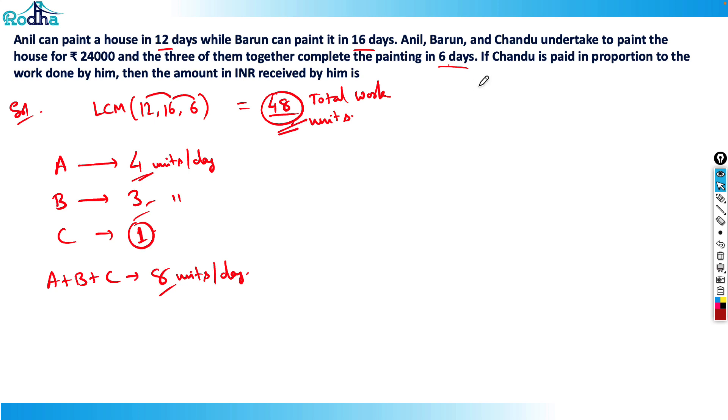Now the question is: if C is paid in proportion to the work done by him, then the amount in INR received by him is what? That means out of 48 units work, these guys have worked for 6 days.